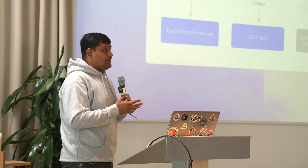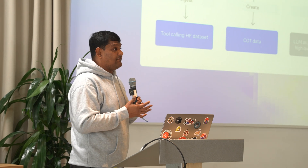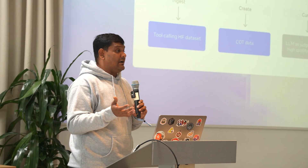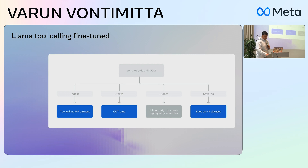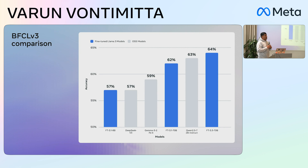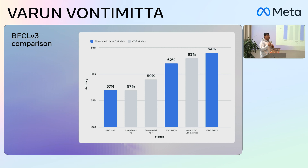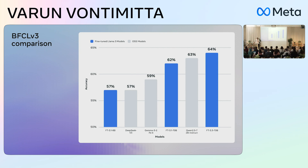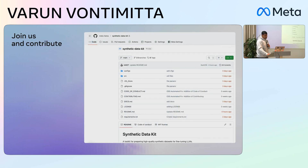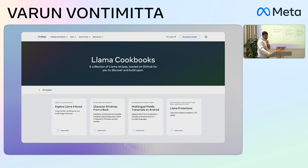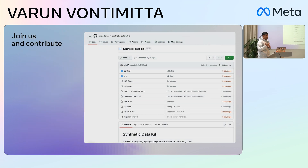We took this tool and actually worked on improving the tool-calling functionality and improving our existing models. We took our existing model, evaluated it on tool calling — it was somewhere really low in number — then added chain-of-thought reasoning to the model and fine-tuned it. All of this was done using the Synthetic Data Kit tool, which helped us get to the performance you see here and beat the base models that we published. Synthetic Data Kit is available on GitHub and you can download it as a PyPI package.